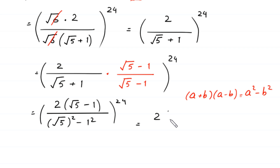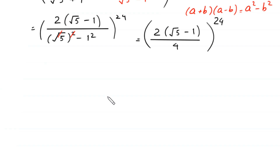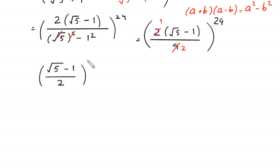Next, 2 times (square root of 5 minus 1) divided by (5 minus 1) equals 2 times (square root of 5 minus 1) divided by 4, whole to the power 24. The 2 and 4 simplify, leaving (square root of 5 minus 1) divided by 2, whole to the power 24.